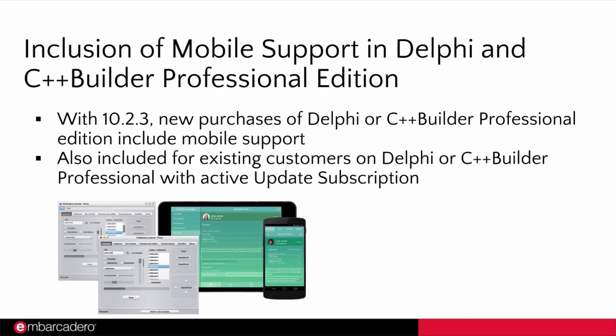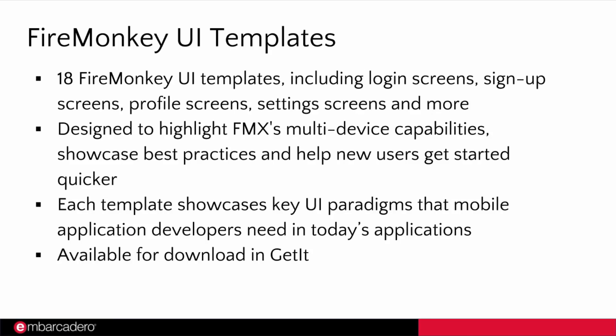Also new in 10.2.3 for Delphi and C++ Builder Professional Edition is the inclusion of mobile support, extending to new purchases and customers on active update subscription. Mobile support was previously sold as a separate add-on pack and is now included. Also new are 18 FireMonkey user interface templates, downloadable from the GetIt Package Manager, designed to highlight FireMonkey's multi-device capabilities, showcase best UI practices, and help you get started building multi-device applications faster.